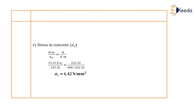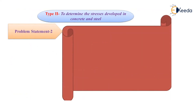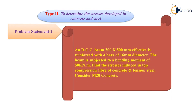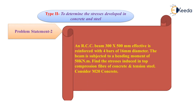We have completed the first problem of type 2. Now we will move to the second problem of the same type. The problem statement is: An RCC beam 300 by 500 mm effective is reinforced with 4 bars of 16 mm diameter. The beam is subjected to a bending moment of 50 kilonewton meter. Find the stresses induced in the top compression fiber of concrete and in steel. Consider M20 concrete.